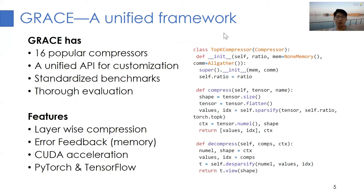Here we present GRACE, a unified framework for gradient compression in distributed training. GRACE has 16 compressors available out of the box for both PyTorch and TensorFlow, including TopK, QSGD, PowerSGD, etc. Moreover, it also provides a unified API to customize your own compressor so that you can compare it with state-of-the-art compression methods. In addition, we have integrated GRACE into various popular machine learning benchmarks and performed a thorough evaluation for them.